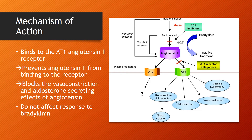Losartan works by interfering with the renin-angiotensin 2 receptor. It binds to the specific AT1 angiotensin 2 receptor and exerts some biologic effects. The drug prevents angiotensin 2 from binding to its receptor; as a result, it blocks the vasoconstriction and aldosterone-secreting effects of angiotensin, and eventually will decrease blood pressure.